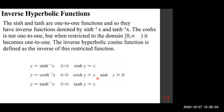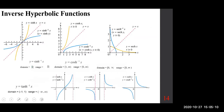Trigonometric functions were also not one-to-one, and we made them so by restriction — we can do the same thing here. For sinh, there is no restriction needed. For cosh, we apply the restriction, and therefore the inverse becomes available because the function must be one-to-one. You can look at the rest of the hyperbolic inverses similarly.